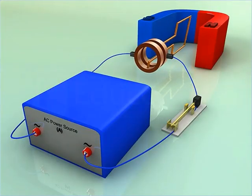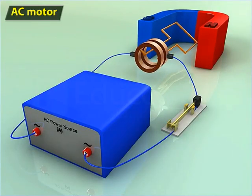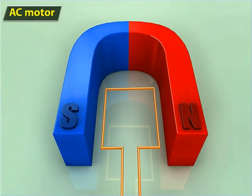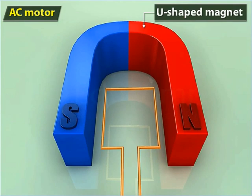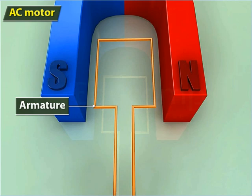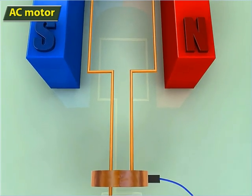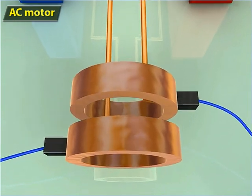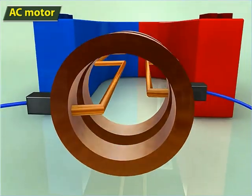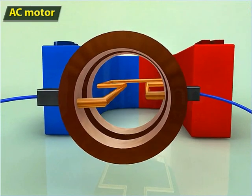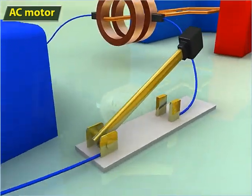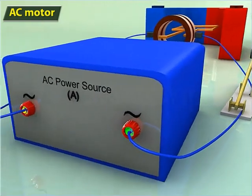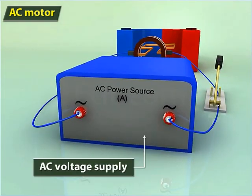Now, let us learn about an AC motor. An AC motor consists of a U-shaped magnet, an armature, slip rings, carbon brushes, a key and an AC voltage supply.